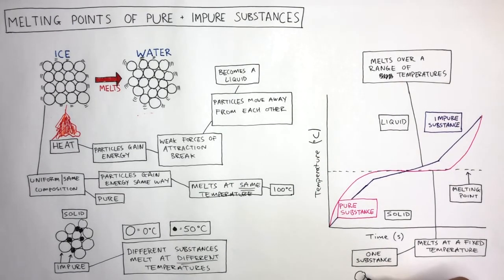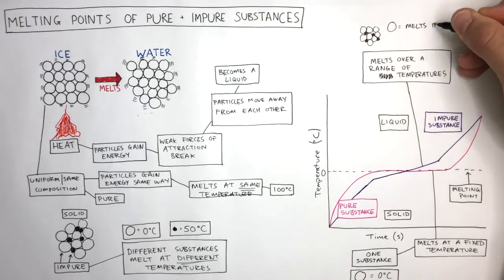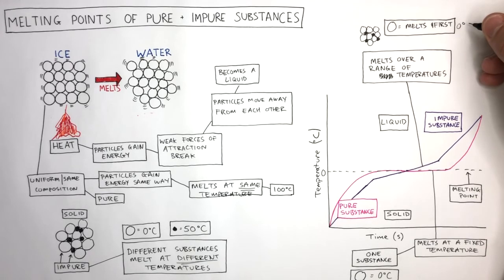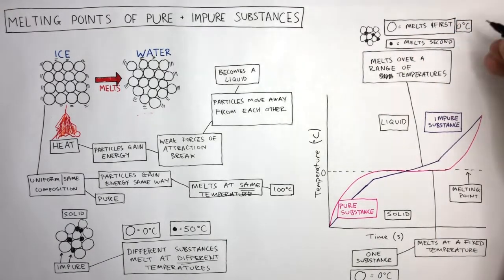The substance represented by the white circle has a melting point of zero degrees C. In this mixture, the white circle will melt first as its melting point is zero degrees C, whereas the small black circle will melt second as its melting point is higher at 50 degrees C.